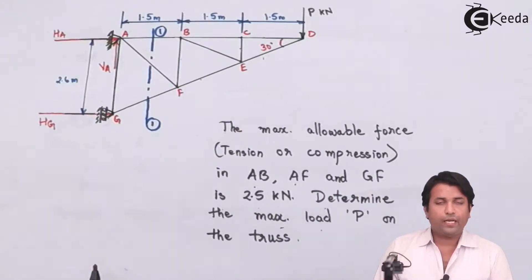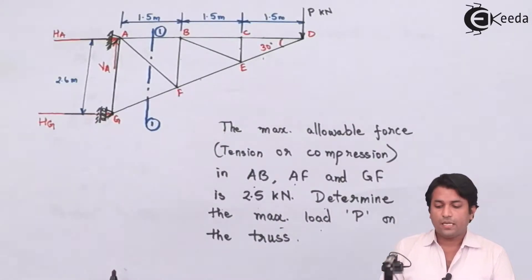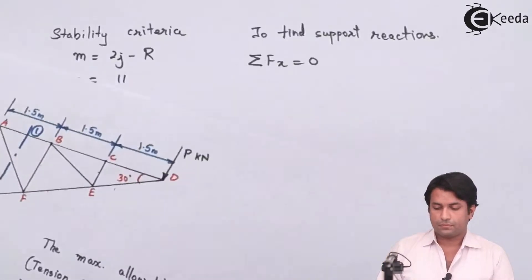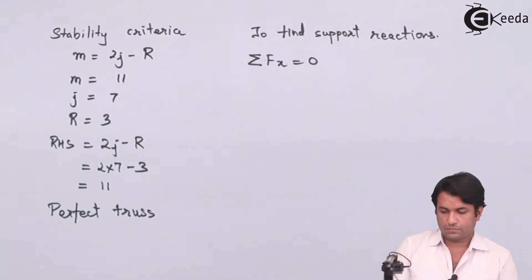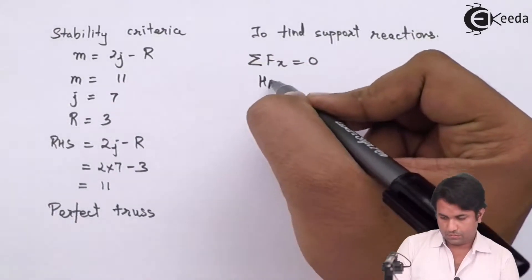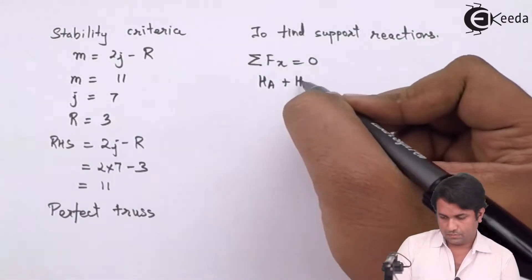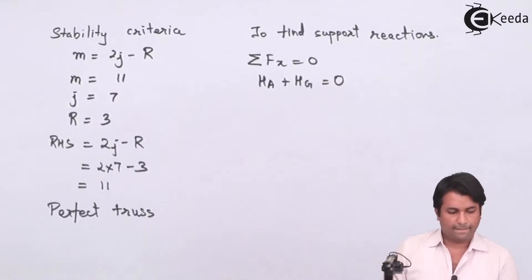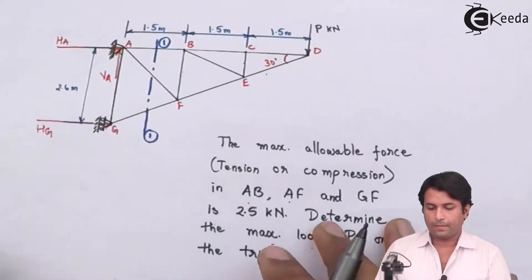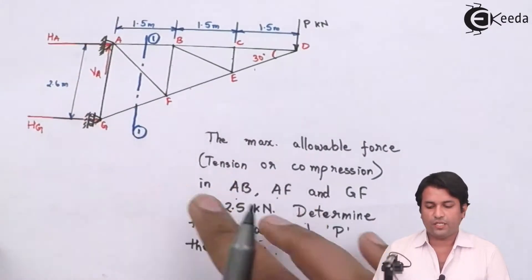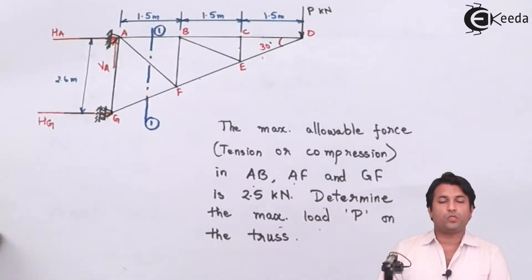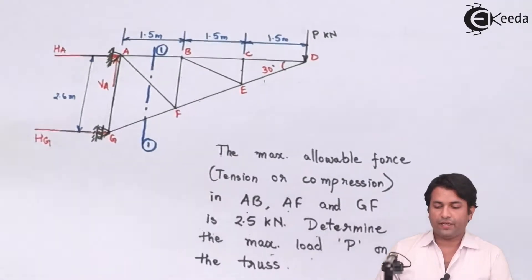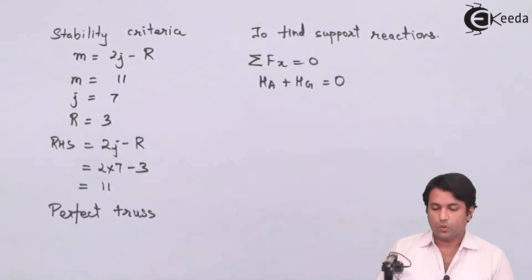I don't have any horizontal force acting in this case, but I do have one vertical force acting. So I will write the equilibrium equation as HA plus HG equals zero.